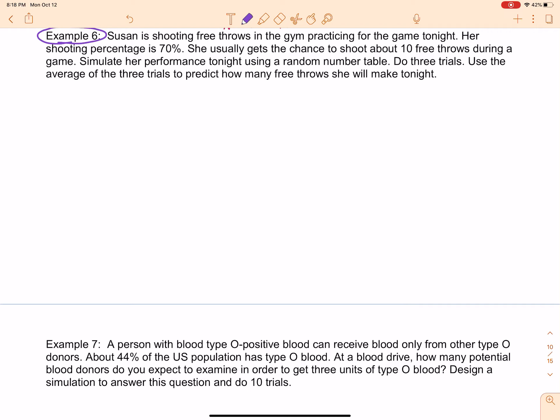Alright, so Susan is shooting free throws in the gym practicing for the game tonight. Her shooting percentage is 70%, so she makes about 70% of her shots and misses about 30%. She usually gets the chance to shoot 10 free throws during a game. We are going to simulate her performance tonight using a random number generator. You are then told to do 3 trials and you are going to use the average of the 3 trials to predict how many free throws she will make tonight.